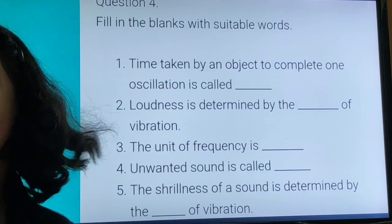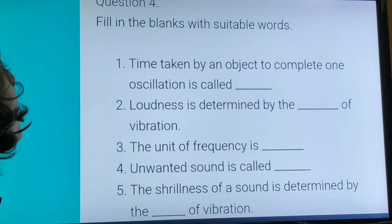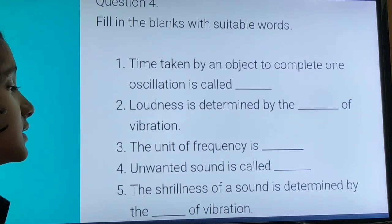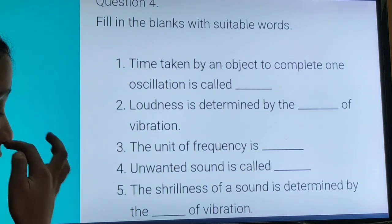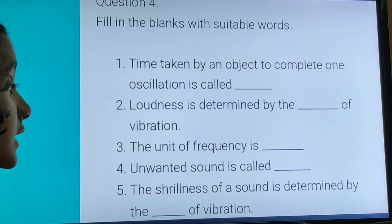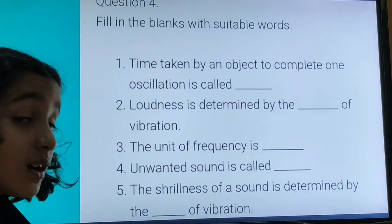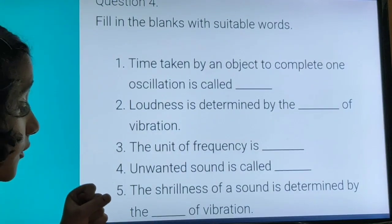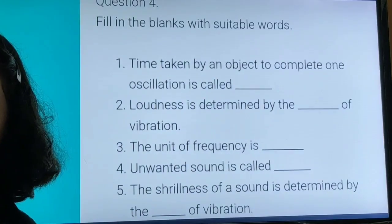Number 4, fill in the blanks with suitable words. Time taken by an object to complete one oscillation is called time period. Loudness is determined by the amplitude of vibration. The unit of frequency is hertz. Unwanted sound is called noise. The shrillness of a sound is determined by the frequency of vibration.